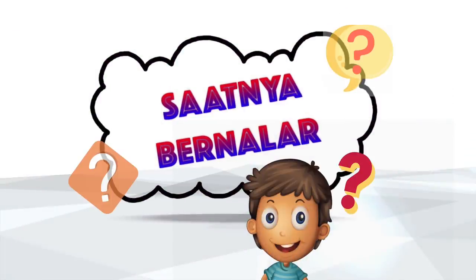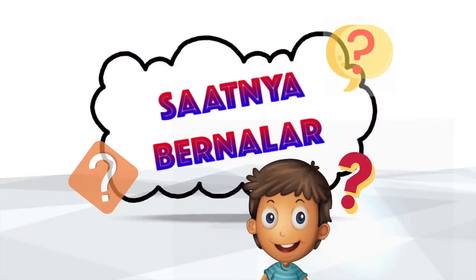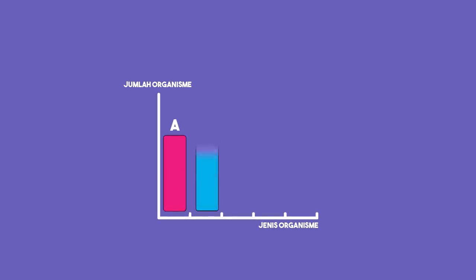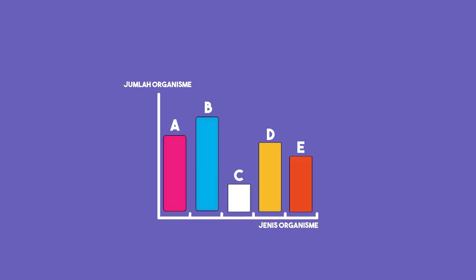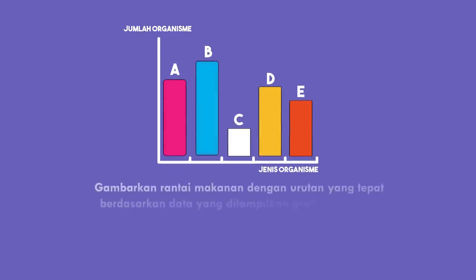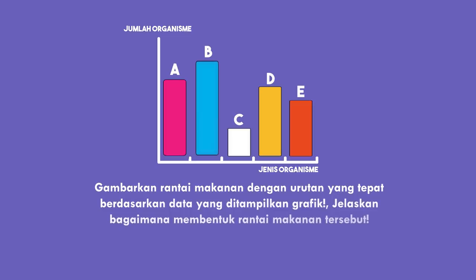Saatnya kita bernalar. Jumlah organisme A, B, C, D, dan E yang membentuk rantai makanan di suatu komunitas ditunjukkan oleh grafik berikut. Susunlah urutan rantai makanan dengan tepat berdasarkan data yang ditampilkan grafik, serta jelaskan bagaimana membentuk rantai makanan tersebut.